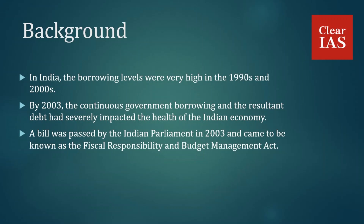Many economists warned that this condition was not sustainable and advised legal steps to prevent India from falling into a debt trap. As a result, parliamentarians felt there should be control on the Government of India to prevent it from resorting to high levels of borrowing to fund its expenditure. Consequently, the FRBM Act was enacted in 2003, known as the Fiscal Responsibility and Budget Management Act.